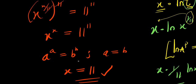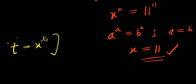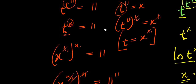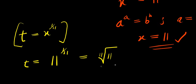That is not all — we need to solve for t. Recall that t equals x power 1 over 11. Since x equals 11, that means t equals 11 power 1 over 11, which is the same as writing the 11th root of 11, using the same identity as before.